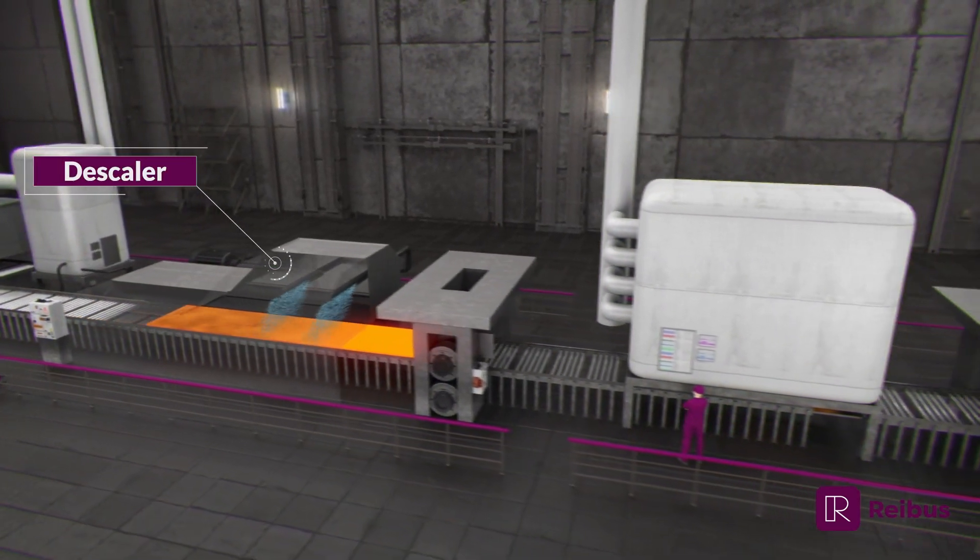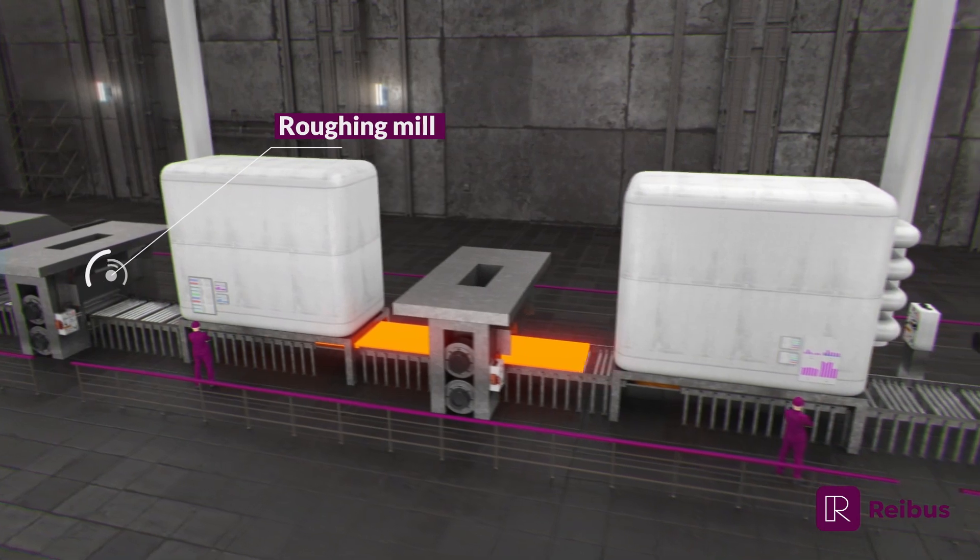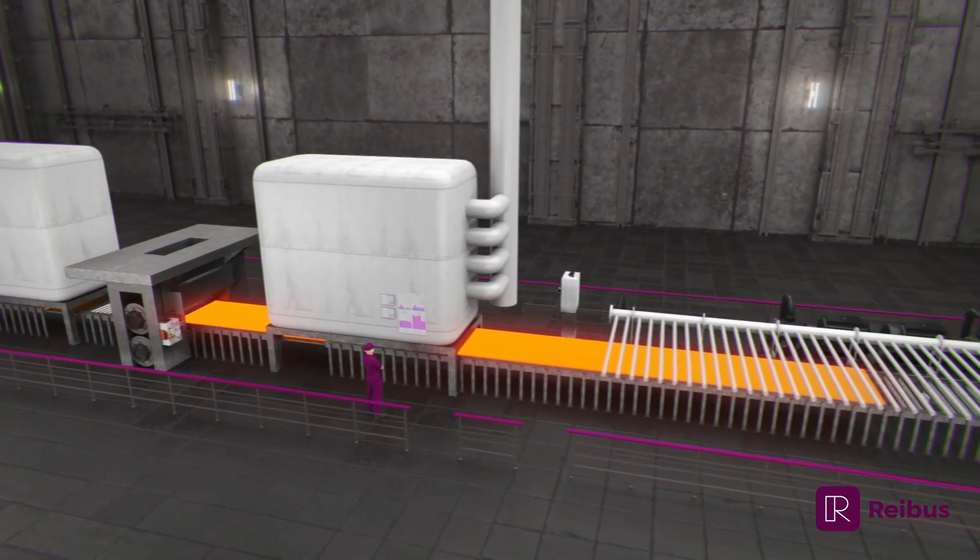Next, the material is descaled, which is where the iron oxide surface scale is removed with high-pressure water to ensure a clean surface.